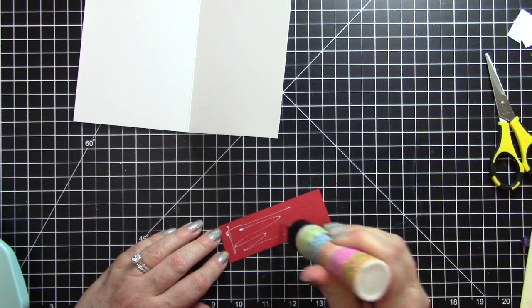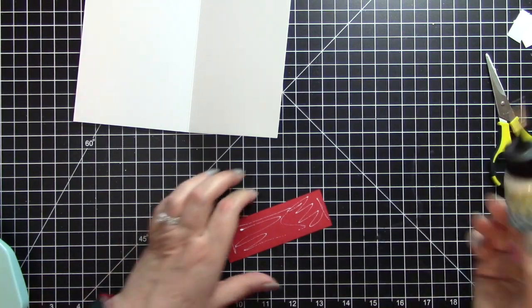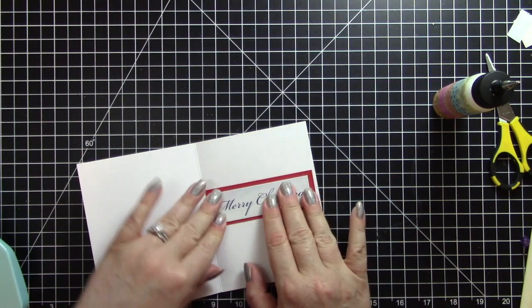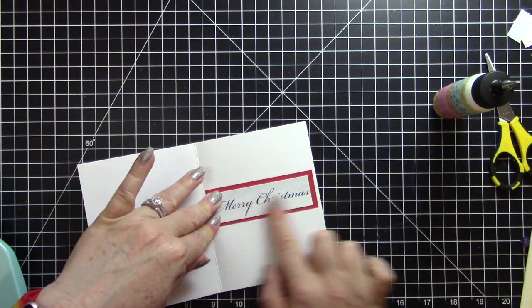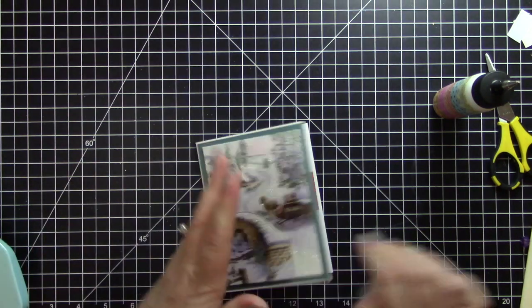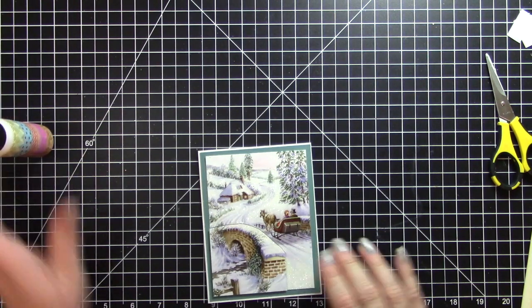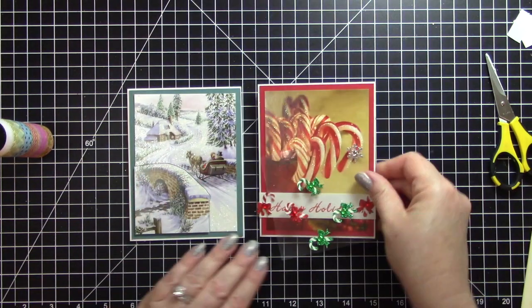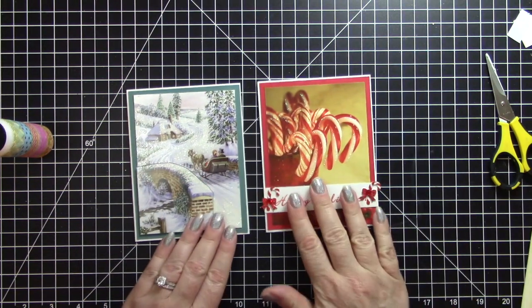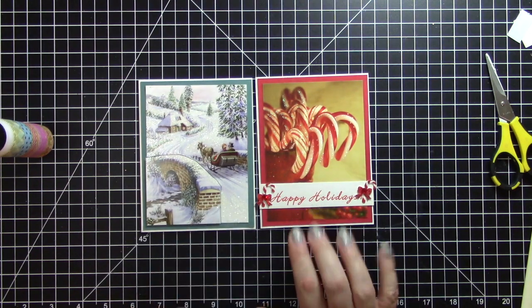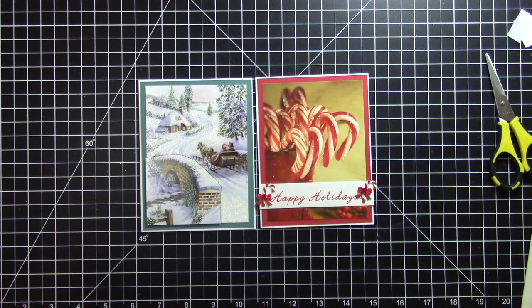These were quick and easy cards just with a couple little extras to make them look a little more than just gluing the card to the front of the cardstock. Now of course you can just pretty much glue the card right on there and it will look pretty good. You don't have to do a lot of extras, but I went ahead and did a little bit of extras. There we go.